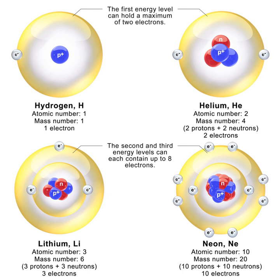Ultracold neutrons are produced by elastically scattering cold neutrons in substances with a temperature of a few kelvins, such as solid deuterium or superfluid helium. An alternative production method is the mechanical deceleration of cold neutrons.